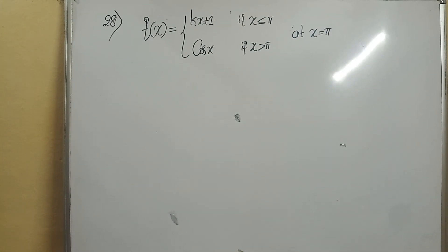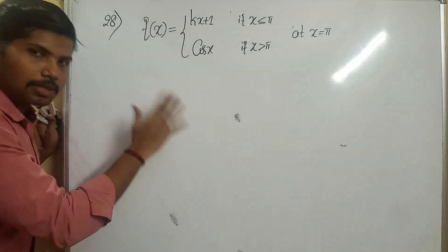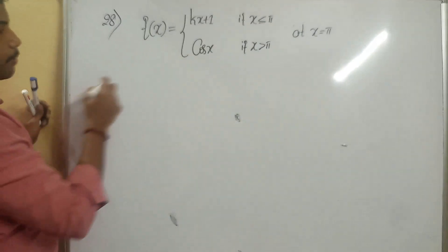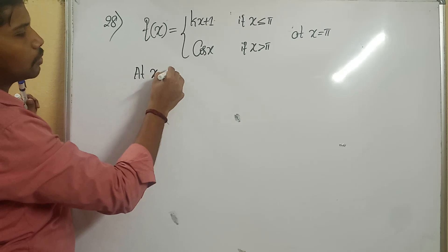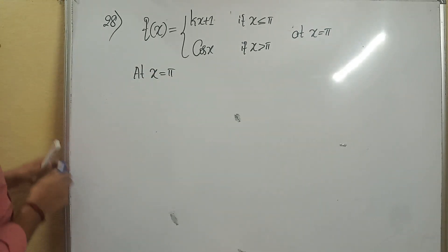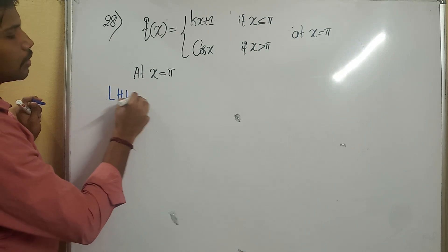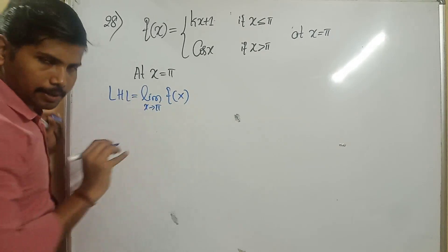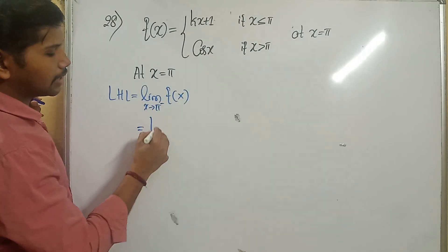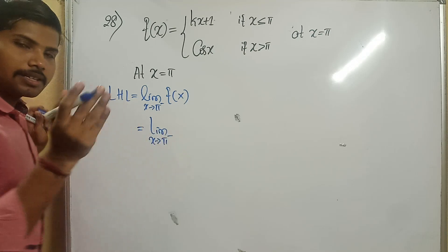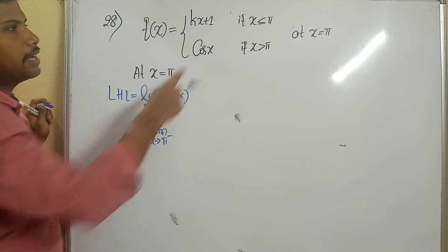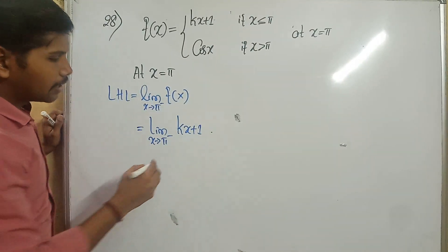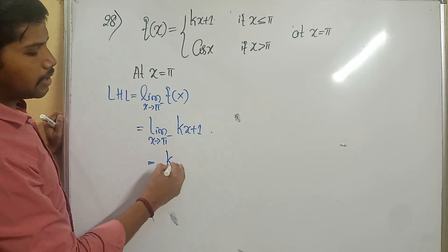The next question is also a similar type. The given function is continuous at x equal to pi. I need to find the value of k. So I write the continuity condition at x equal to pi. For LHL: limit of f(x) as x tends to pi minus. Pi minus means less than pi, so the function is kx + 1.